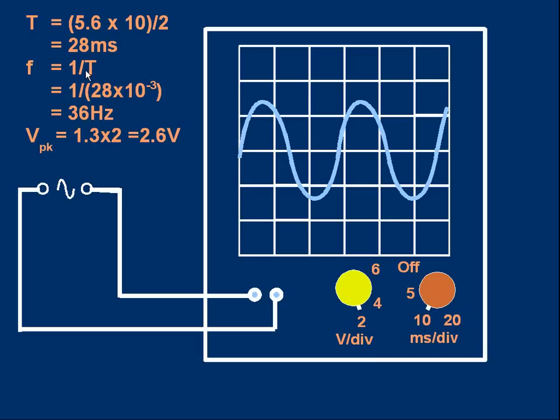To find the frequency, it's 1 over the period. 1 over 28 milliseconds is 28 times 10 to the minus 3 seconds. Comes to two significant figures to 36 hertz. 36 cycles per second in old-fashioned terminology. 36 hertz.